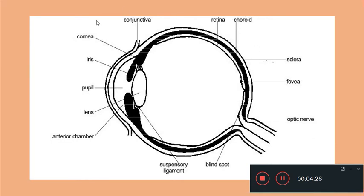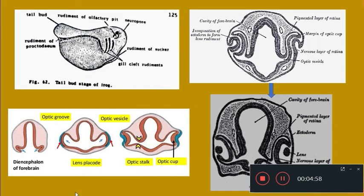When there is a lens, the cavity inside the eyeball is divided into two regions. The region between the cornea and the lens is called as the anterior chamber or the aqueous chamber, and the larger chamber between the lens and the retina is called as the vitreous chamber. This is the structure of an adult frog eye, and now we will come to the development of the eye.